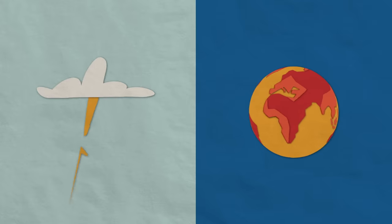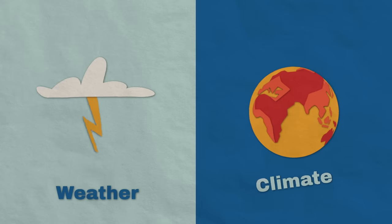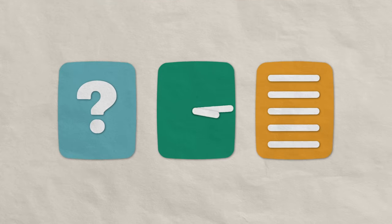To answer this question, we need to understand the differences between weather and climate: what they are, how we predict them, and what those predictions can tell us.